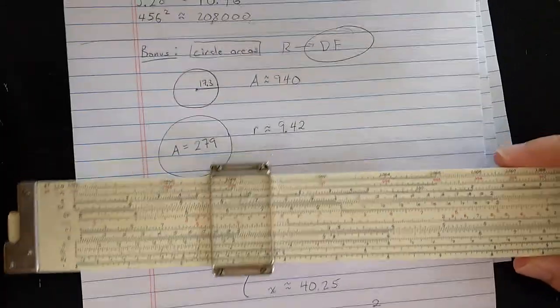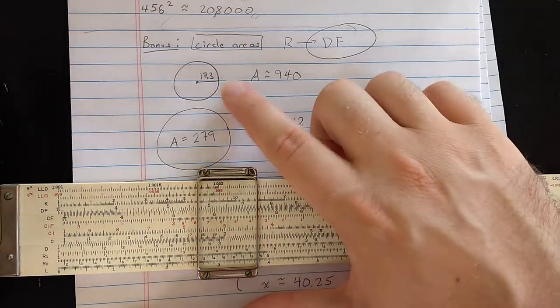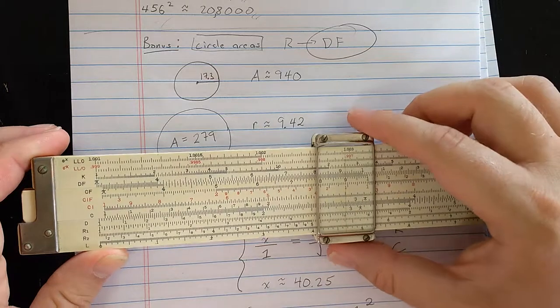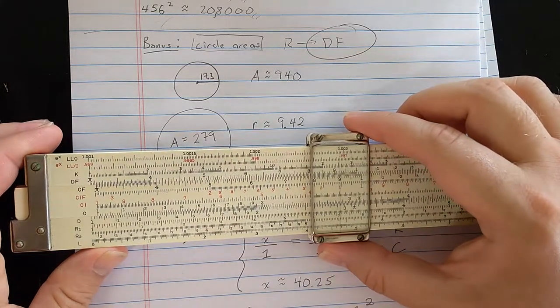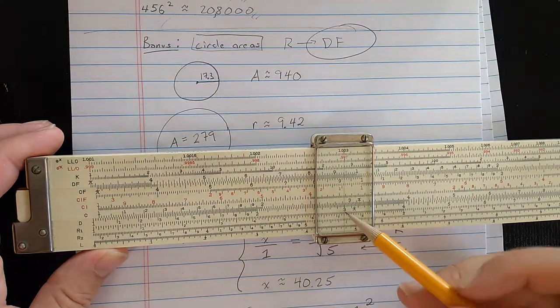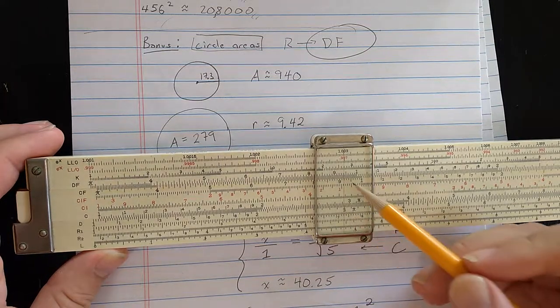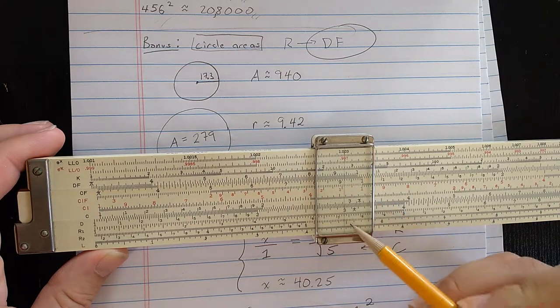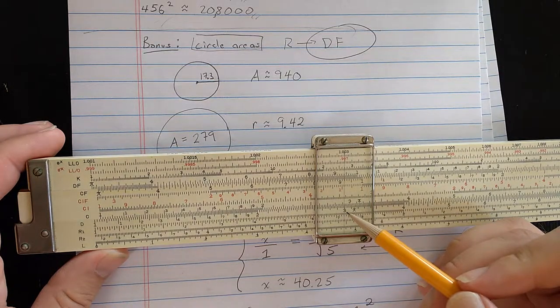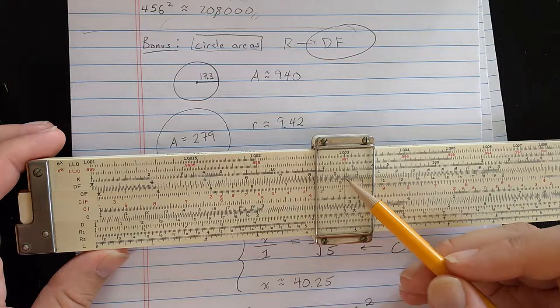A nice consequence of having the root scales is that you can compute areas of circles easily. So, for example, if I set, if I have radius 17.3 and I find that, that's going to be on R1. So there's 1, 7, 1, 7, 3, right there, I found on R1. Then, the square of that number is reading on D, like we just said. But, if you take a number on D and you go to DF, that multiplies by pi. So, setting it on R1 or R2 and then going to D is squaring the number. So, I compute 17.3 squared and then reading on DF, it computes that number times pi and I read 940 right here on DF.